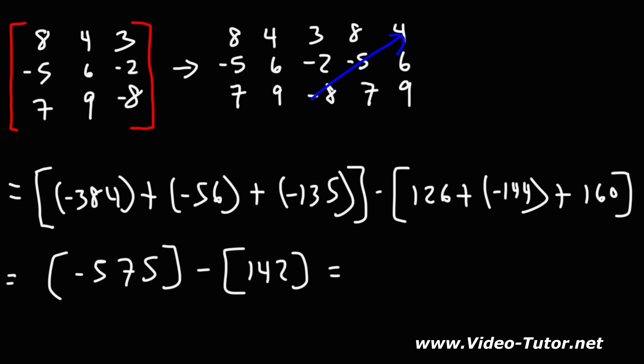Now, negative 575 minus 142 is negative 717. So, this is the final answer. That's the value of the determinant of this 3 by 3 matrix. So, now, you know the shortcut method to quickly get this answer.